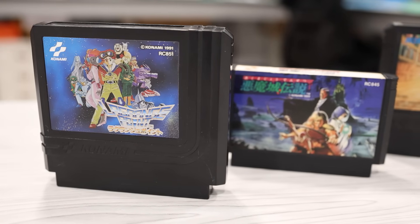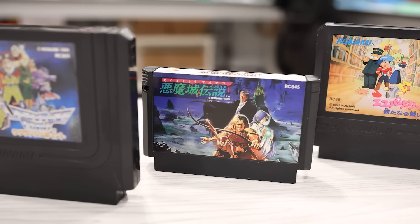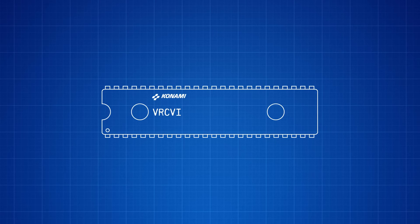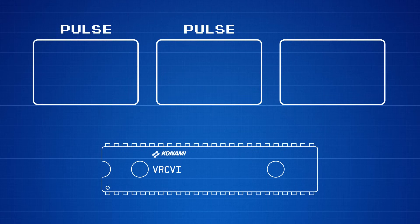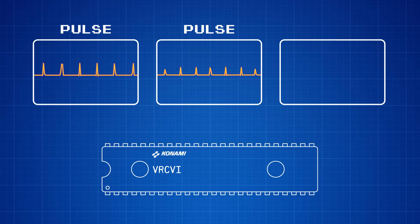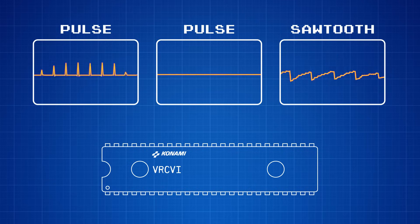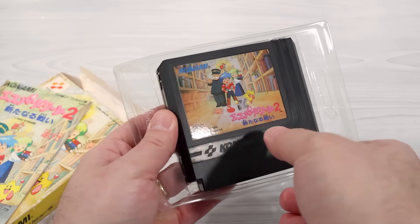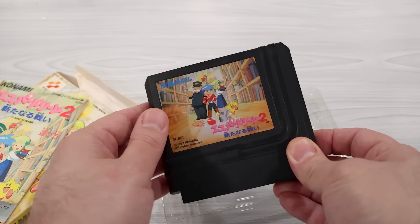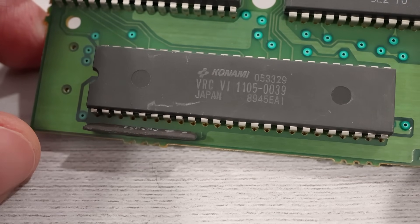Konami, on the other hand, had the VRC6 and VRC7. The VRC6 also added three additional sound channels. Unlike the Sunsoft 5B, only two of them were pulse channels. Although they didn't have all the features of the Famicom's built-in pulse channels, they did offer more duty cycle variations. But the VRC6's third channel offered something that the APU didn't have, and that was a sawtooth waveform. Still, only three games used the VRC6. Esper Dream 2 was one of them, but one of the best ways to demonstrate the difference in audio is in the game Castlevania 3. The Famicom version had the VRC6, while the NES version didn't.